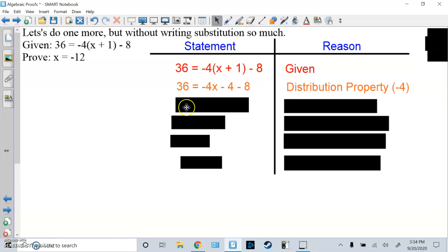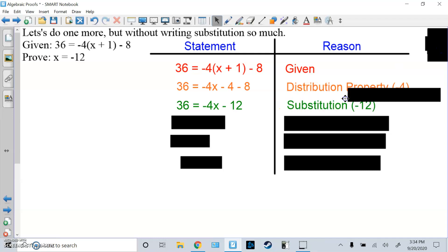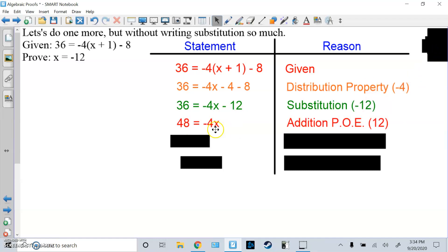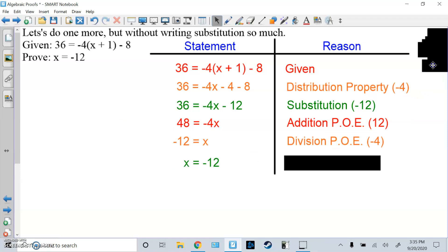From here you combine like terms. So here you have to write substitution because we substituted -12 in for -4 minus 8. We combine those two. Then I would add 12 to both sides to get this. Then I divide it by -4 to get -12 = x. So that's the division property of equality. Now notice these steps pretty much talk about the step before. Now we're not done. They said prove x = -12, not -12 = x. So there's one more step. I can flip it because of the symmetric property of equality. So here's a full proof.